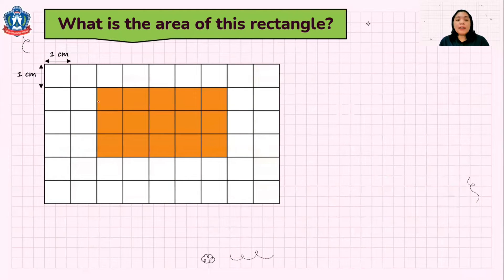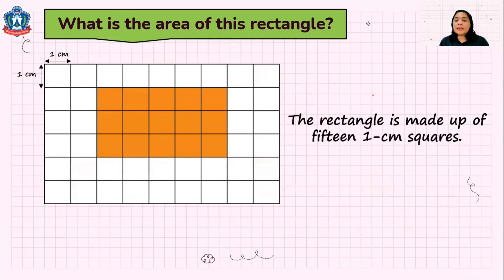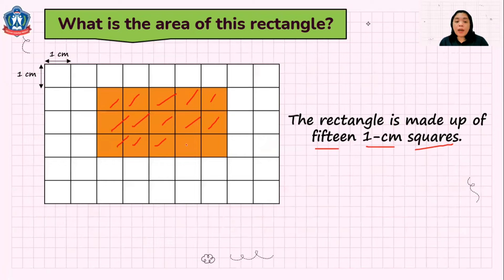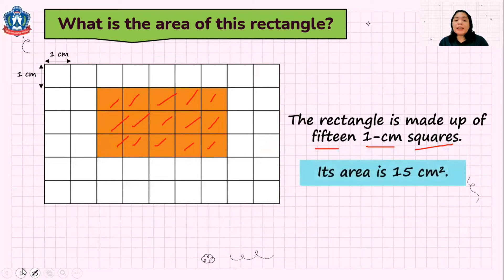What is the area of this rectangle? This rectangle consists of, or is made up of, 15 1 cm squares. So there are 15 1 cm squares. The area of this rectangle then is 15 square centimeters. So this is the area of this rectangle.